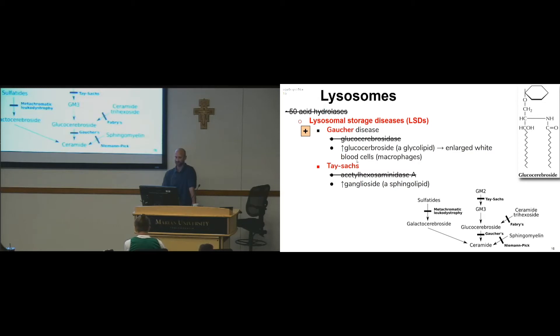Again, you don't need to know that structure, I'm just showing it to you. Tay-Sachs: you don't have hexosaminidase A, which causes you to increase ganglioside, which is a sphingolipid.